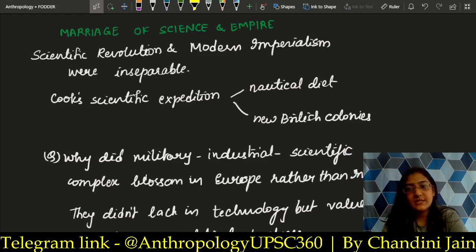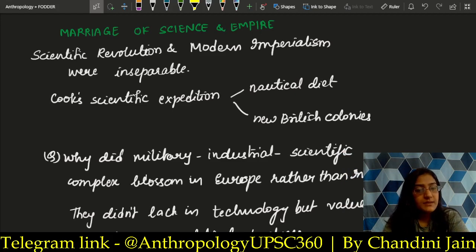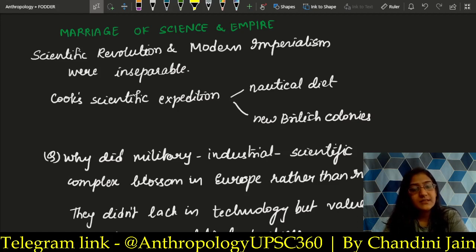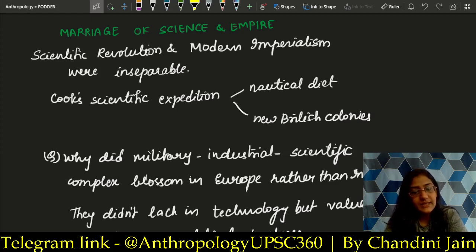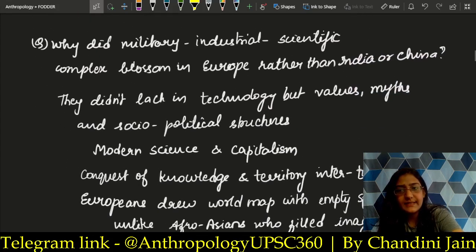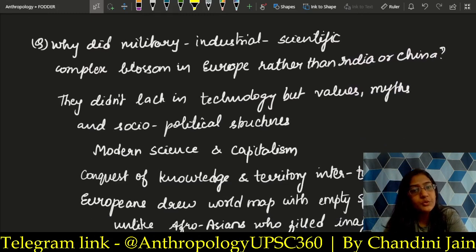The marriage of science and empire is another interesting topic. Scientific revolution and modern imperialism are inseparable — this point can be used at multiple places. For example, Cook's scientific expedition: before those voyages, naval officers died of scurvy. They scientifically conquered this by including citrus fruits in the diet — this was named the nautical diet. Through Cook's expedition, they went to Australia and began exploring new British colonies.